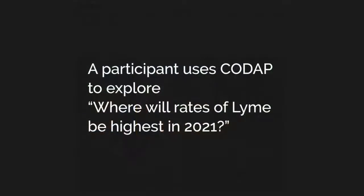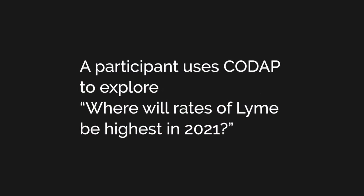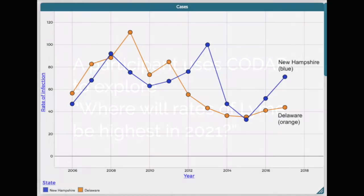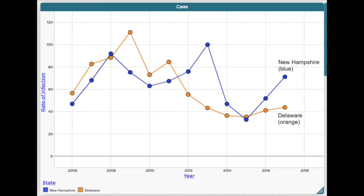At first, we didn't know whether to put Delaware or New Hampshire up. And then we saw that New Hampshire's rate of infection has been steadily increasing. And so if that rate of growth is steady, it will have a rate of infection higher than Delaware.